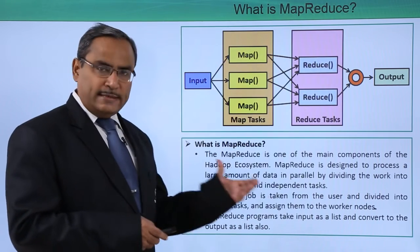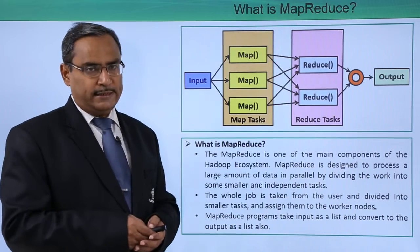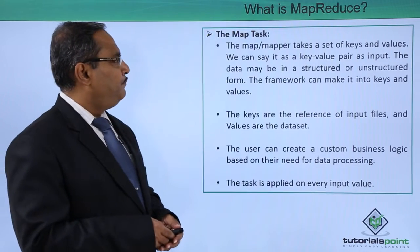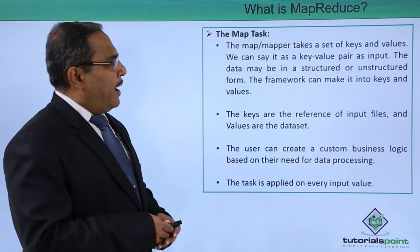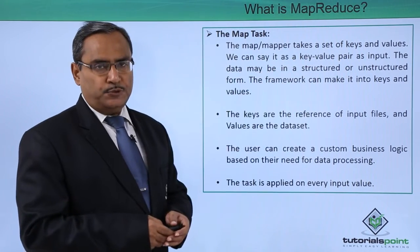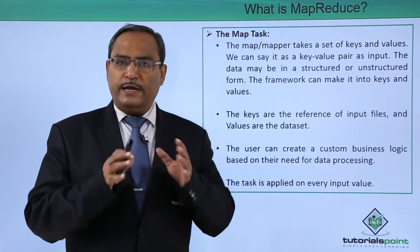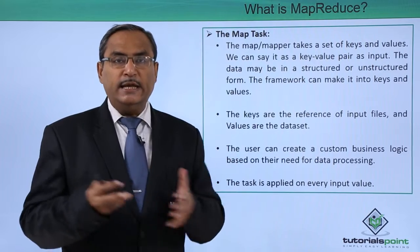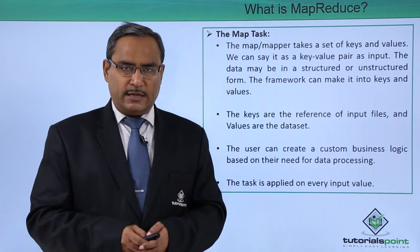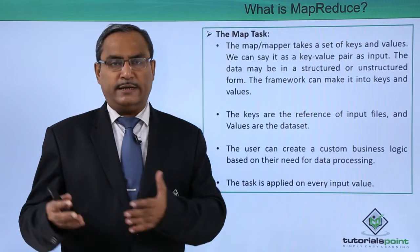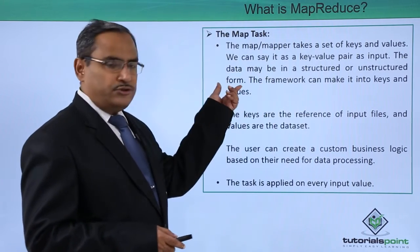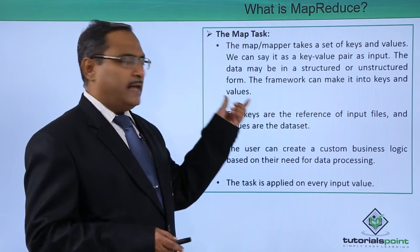MapReduce programs take input as a list and convert the output also as a list. The mapper takes a set of keys and values — that is, key-value pairs — as input. The key is actually nothing but a reference to a data set, and the values are nothing but the data sets. The key can be treated as a reference to a data set or reference to a file, and the value is nothing but the data set itself.